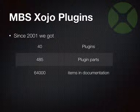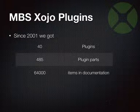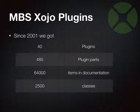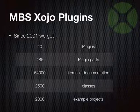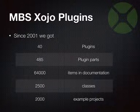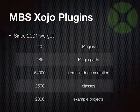The documentation shows 64,000 items, including two and a half thousand classes, lots of methods, properties, and constants. We have over two thousand example projects — so if you check out 40 a day, maybe a year.